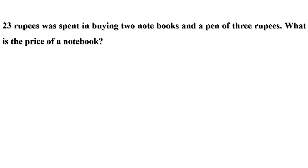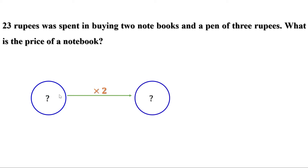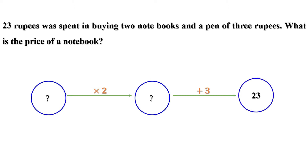Let us start with a problem. 23 rupees was spent in buying two notebooks and a pen of 3 rupees. What is the price of a notebook? Two notebooks were bought, so multiply by 2 to get the price of two notebooks. Then a pen of 3 rupees was bought, making the total amount spent 23 rupees.